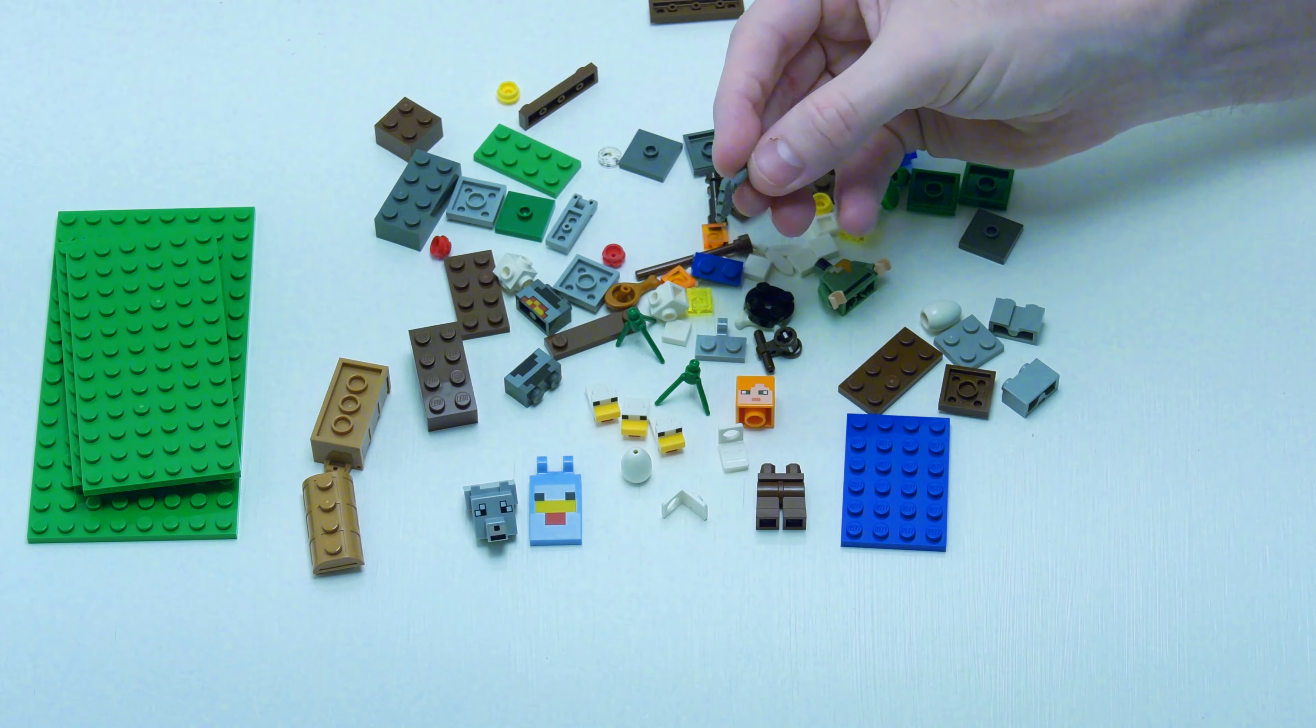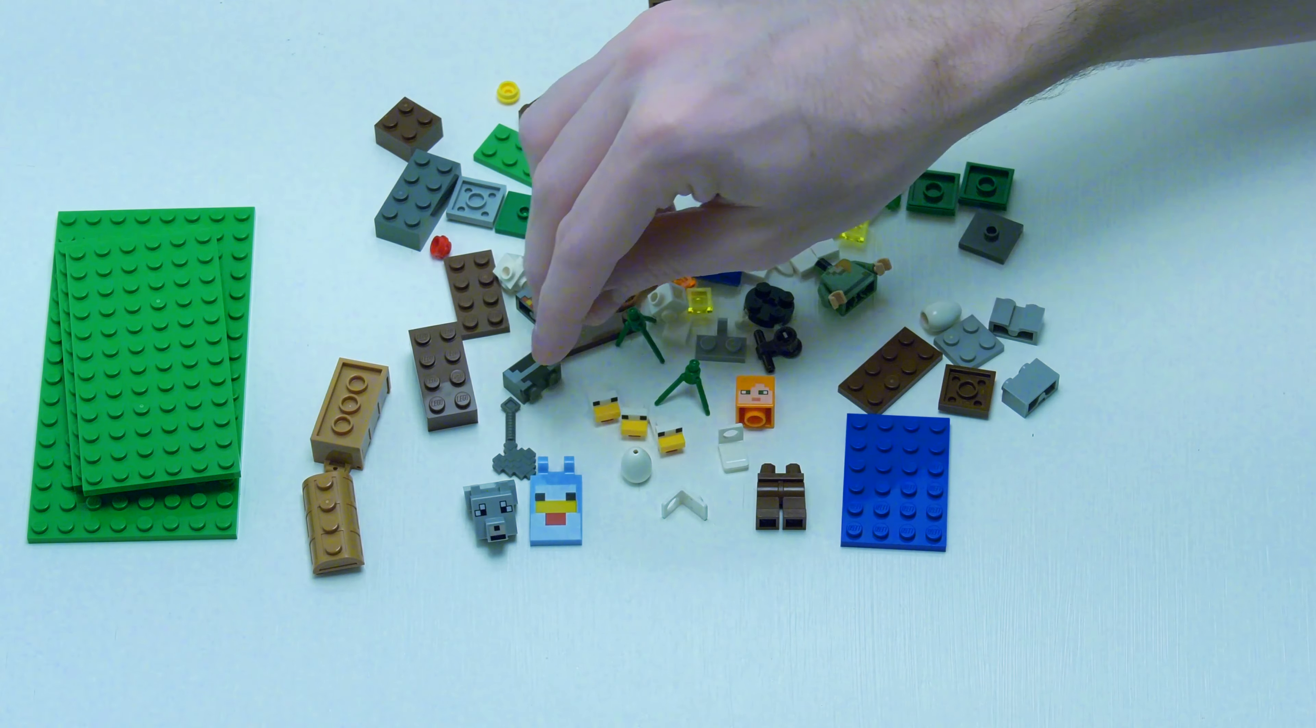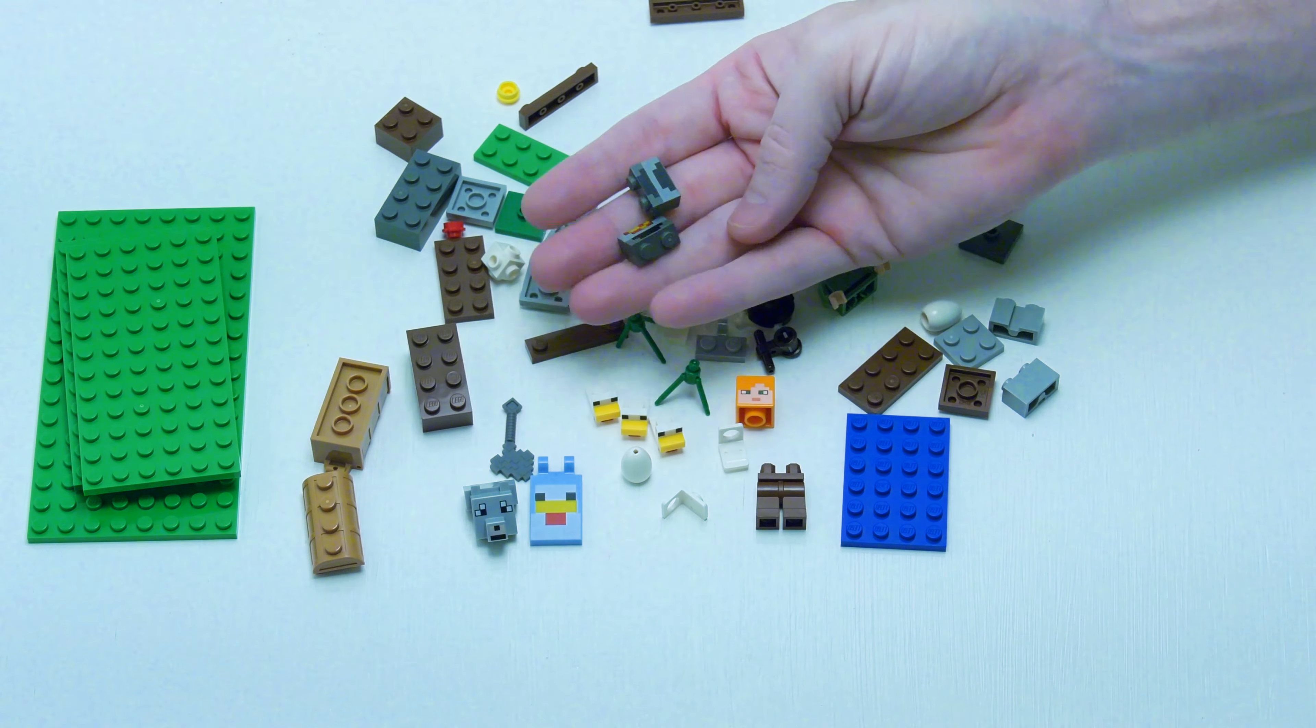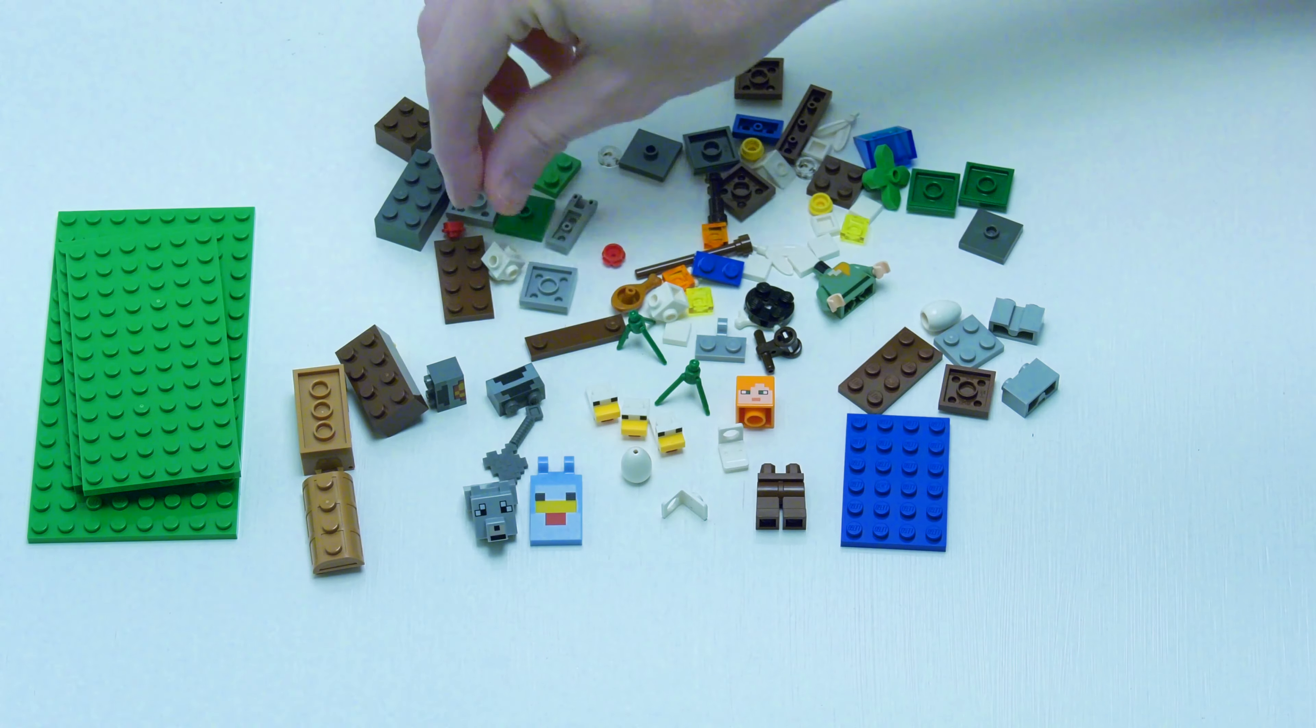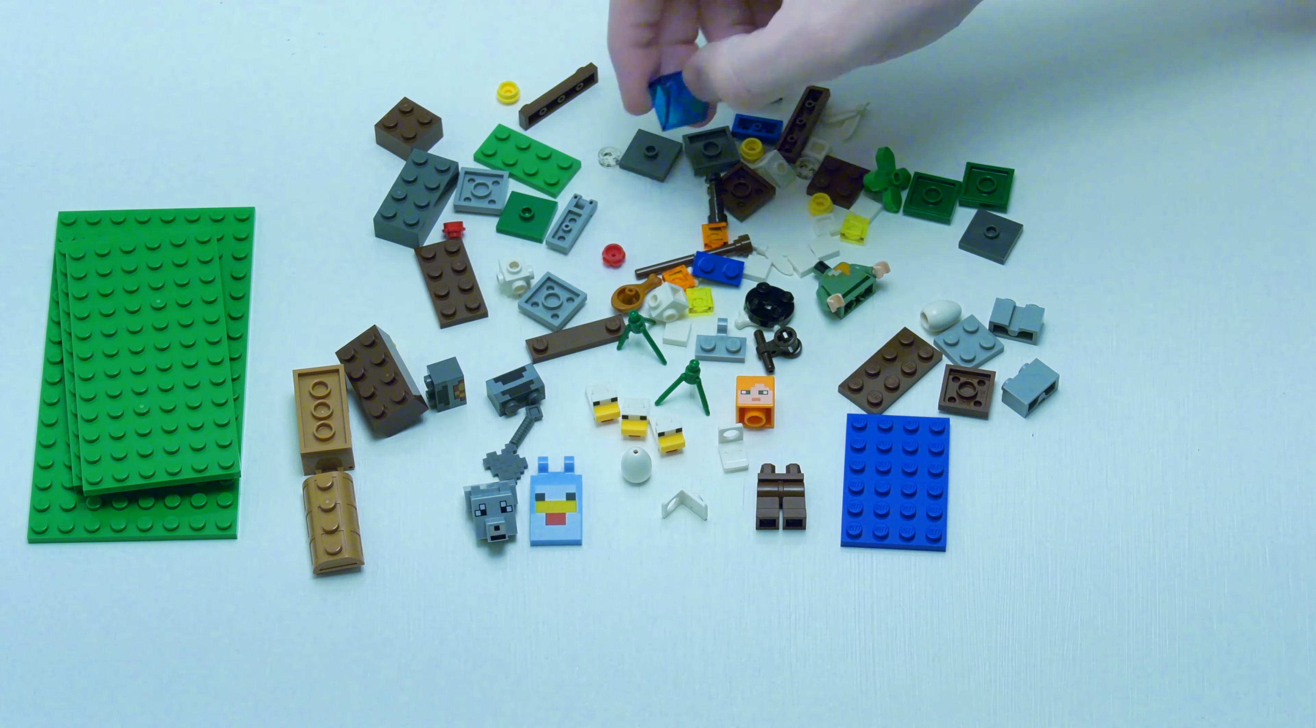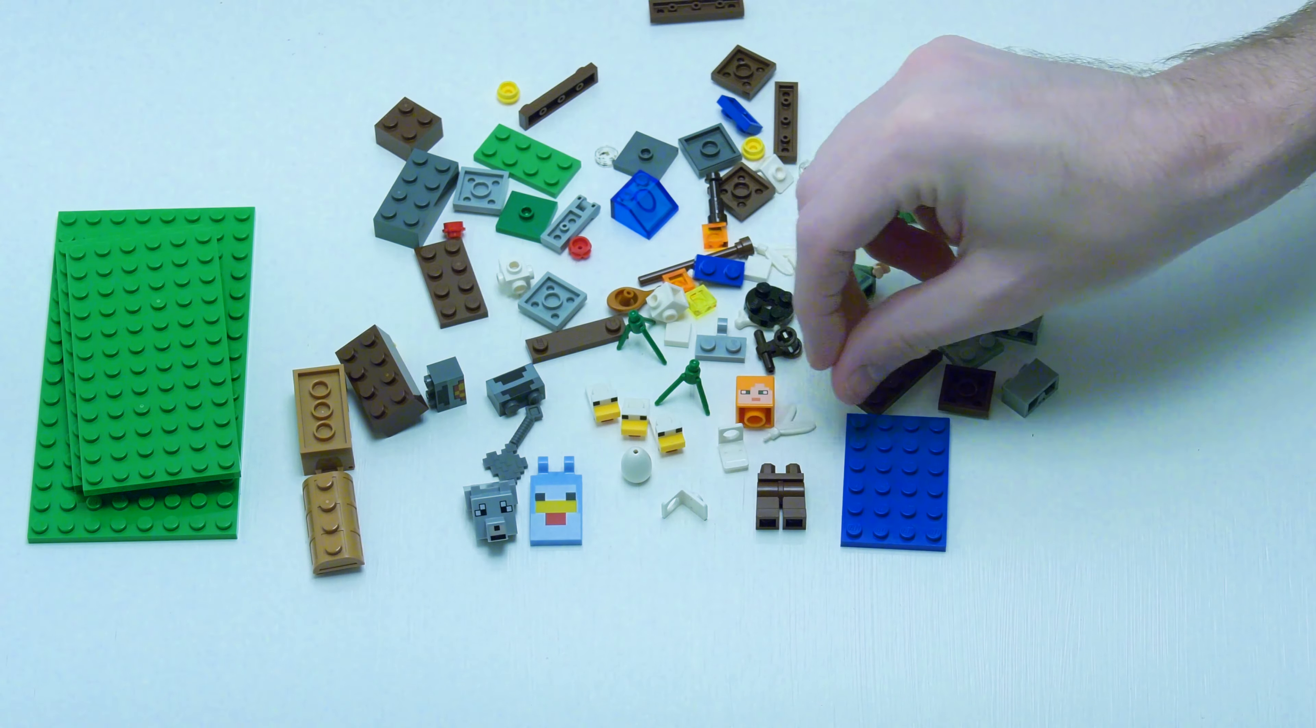Look, we got ourselves I think that's a stone axe which is my favorite piece in the game, my favorite weapon. We got two furnace pieces that are printed. Looks like you only get one egg in this. We got a transparent slope and some feathers from the chickens.